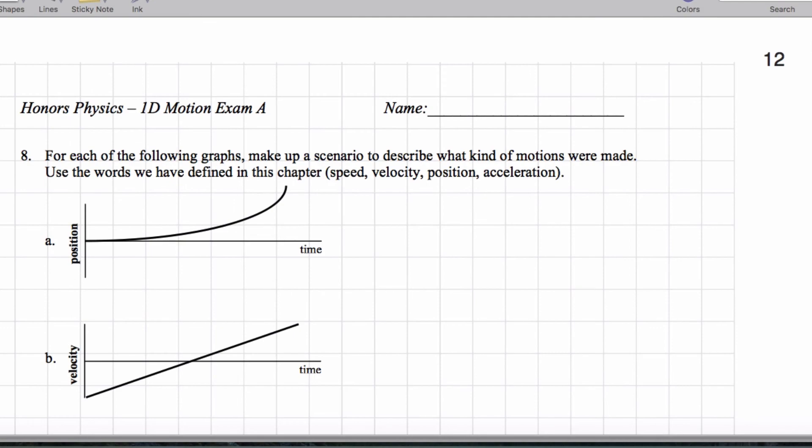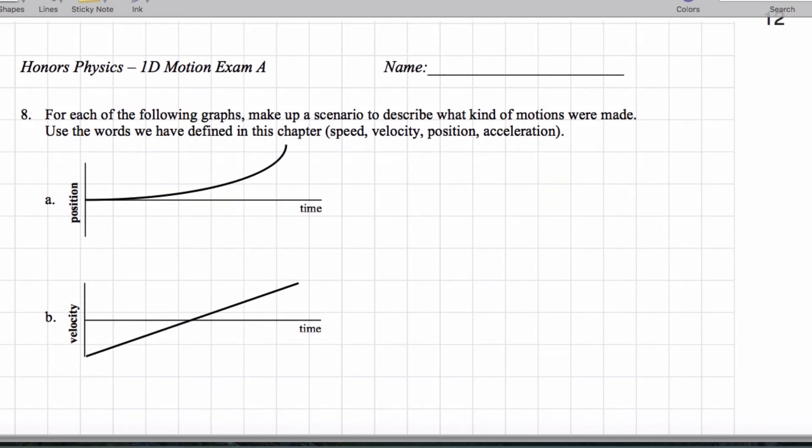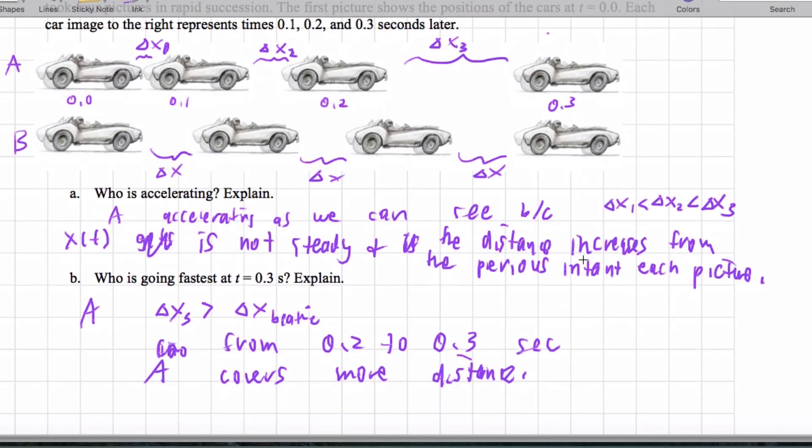So that's how we know that Ashan's going faster. And we can actually say that this is problem number seven. Okay.